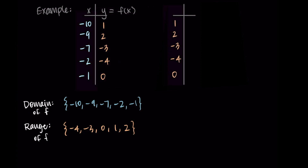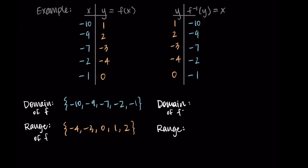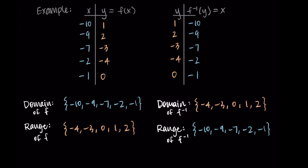To represent the inverse function as a table, I take the two columns and swap them. The original function had x as input and f(x) as output. Those output values become the new inputs for the inverse, so the input column for the inverse are y values, giving a corresponding f inverse of y, or x value. The domain and range switch: the domain of f inverse is {−4, −3, 0, 1, 2} and the range of f inverse is {−10, −9, −7, −2, −1}.